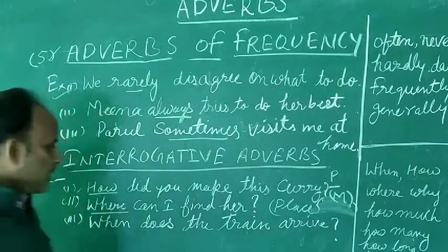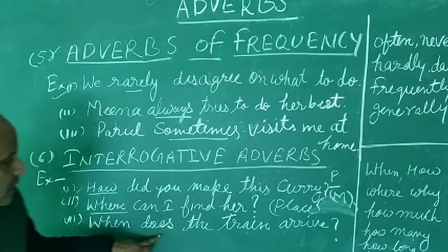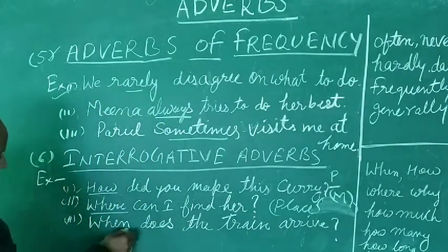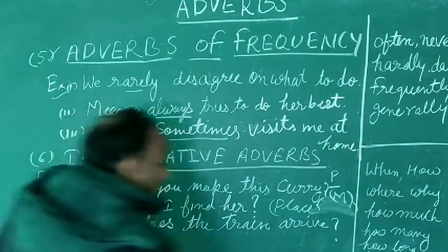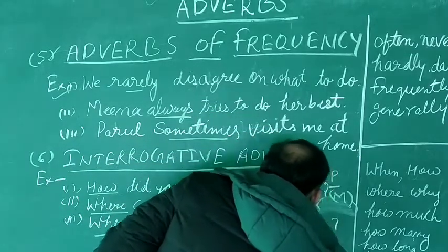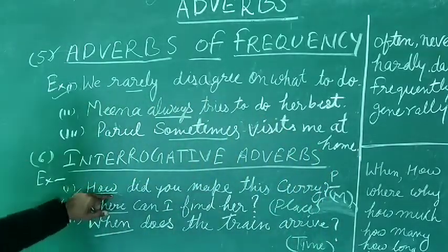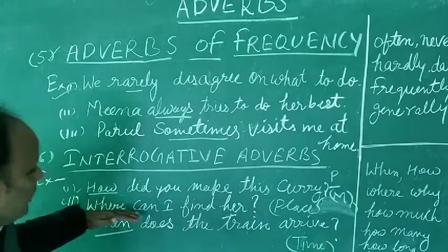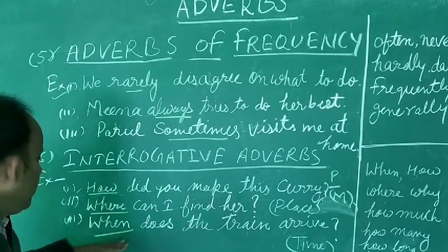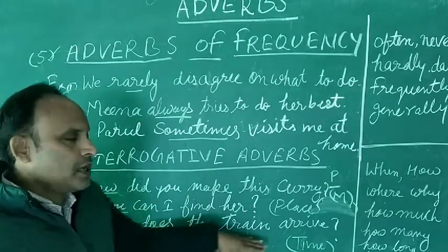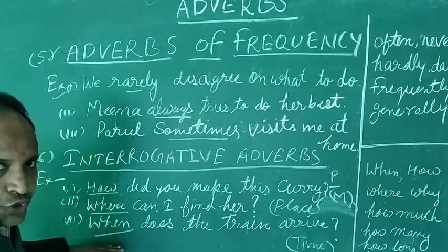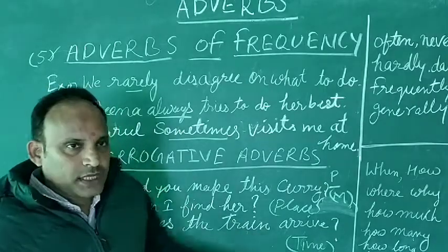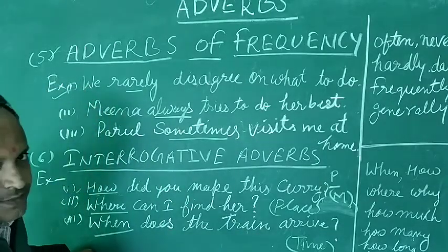So to summarize: 'How did you make this curry?' — this is an Adverb of Manner. 'Where can I find her?' — this is an Adverb of Place. 'When does the train arrive?' — the word 'when' indicates time, so this is an Adverb of Time. These are the examples of Interrogative Adverbs.